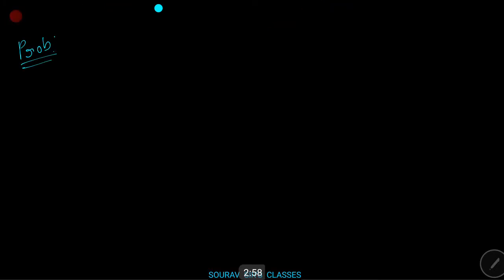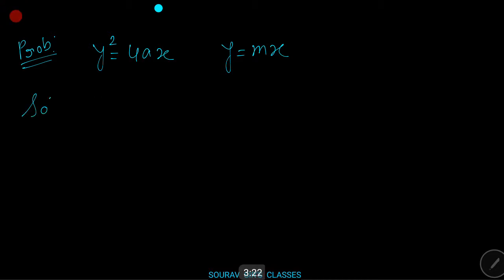Next problem: find the area of the region enclosed by the parabola y² = 4ax and the chord y = mx. The equation y² = 4ax represents a parabola in standard form, and y = mx represents a line passing through the origin with slope m.